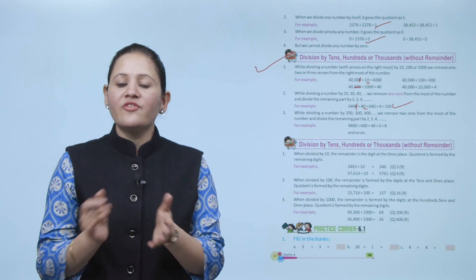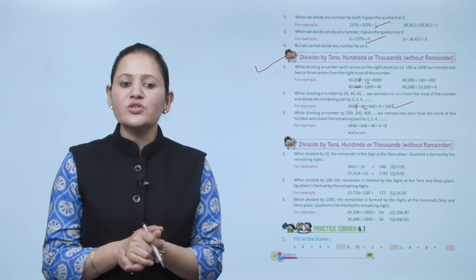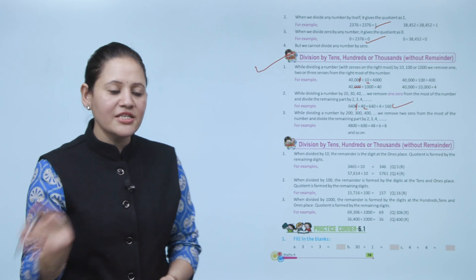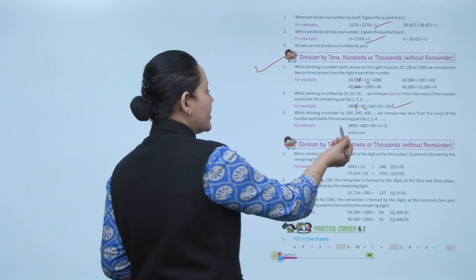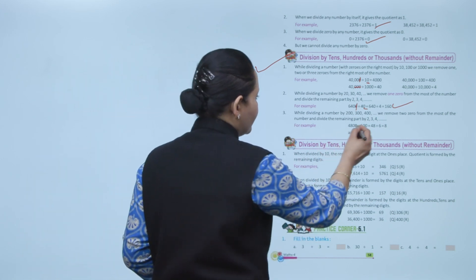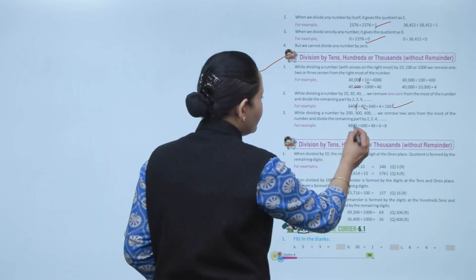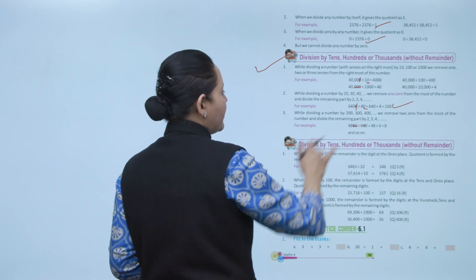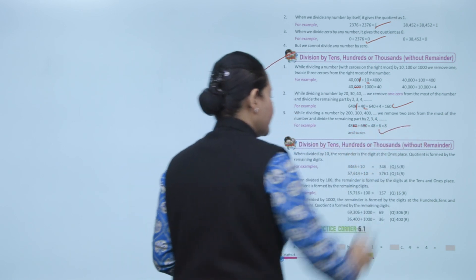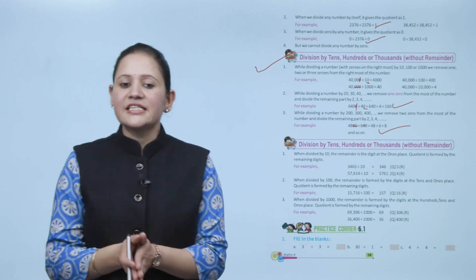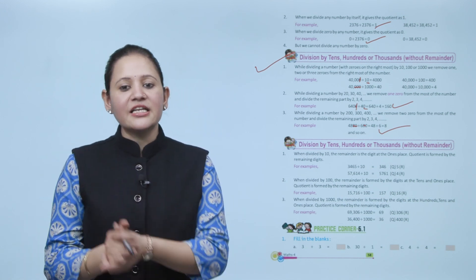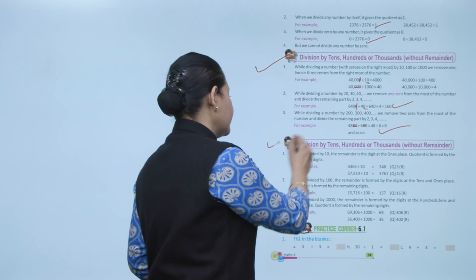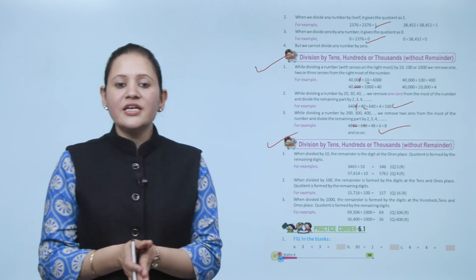While dividing a number by 200, 300, 400, we remove 2 zeros from the rightmost of the number and divide the remaining part by 2, 3, 4, and so on. For example, 48,100 divided by 600 — remove 2 zeros, then 481 divided by 6 gives 8. Wait — 48 divided by 6 gives 8.